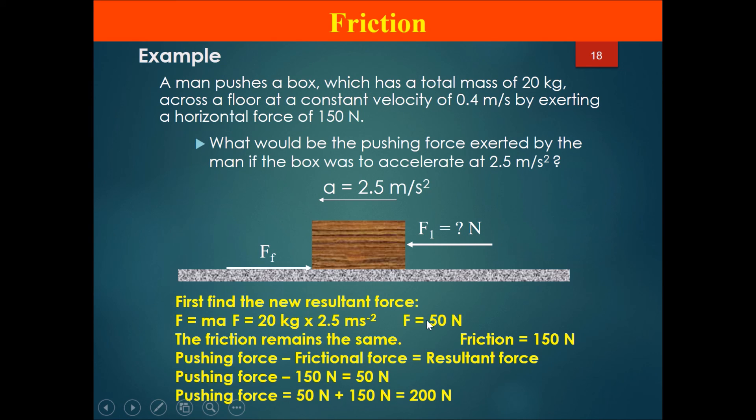Friction will be the same as the previous question, which is 150 N. This pushing force minus this force over here should give me the resultant force. Therefore, putting it in an equation, the pushing force minus 150 N should end up giving me 50 N of remainder force. So rearranging the formula, my pushing force will equal 50 plus 150 N, getting me 200 N. The force was increased from 150 N before to 200 N now.